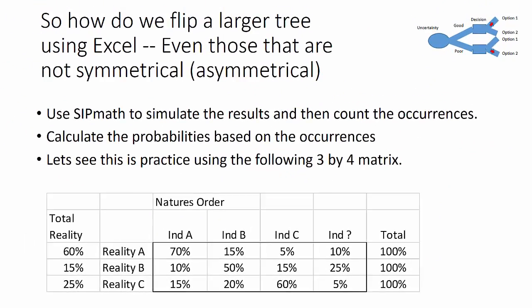So how do we flip our larger tree using Excel? Even those that may be not symmetrical or asymmetrical. We're going to use SIPMath to simulate the results and then count the occurrences and calculate the probabilities based on those occurrences.